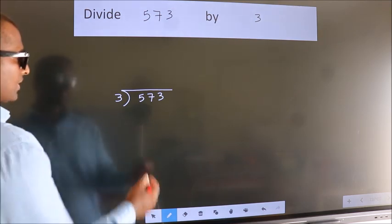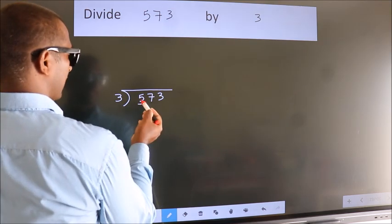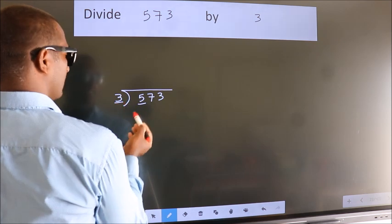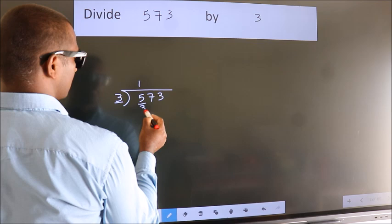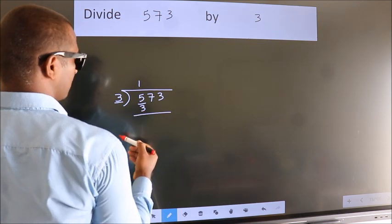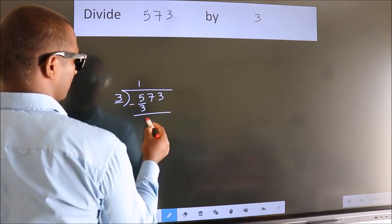Next, here we have 5, here 3. A number close to 5 in the 3 table is 3 1s 3. Now we should subtract. We get 2.